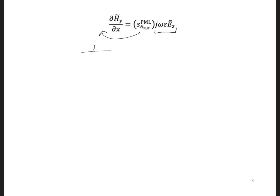In this case, we have 1 over s ezx PML and that's multiplied by dh y dx.